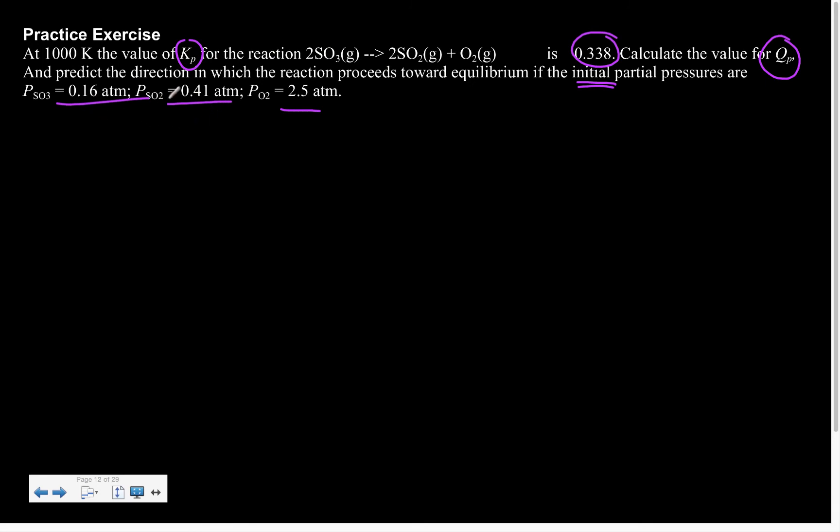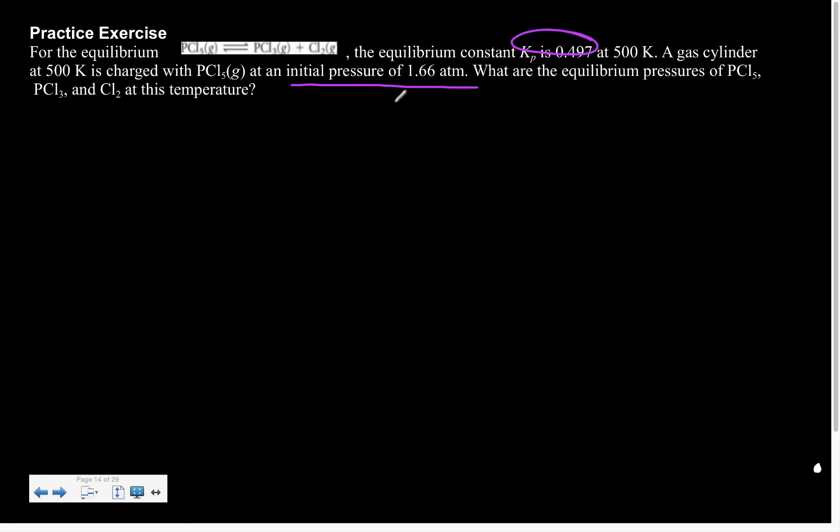Here, we know all of my initial pressures, which means we can do a Q versus K. Here, though we're not asking about which direction is it going to move. We are asking what the equilibrium pressures are, which means that there's going to be a change in everybody's pressure until we reach equilibrium, which means that this should go ding, ding, ding in your head as a RICE table problem.